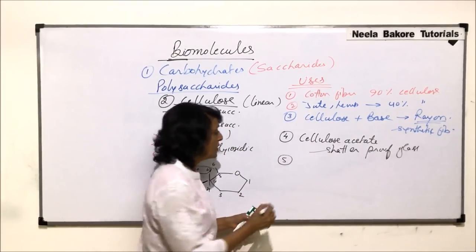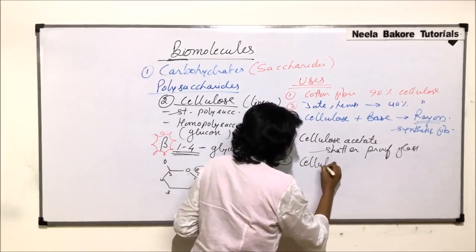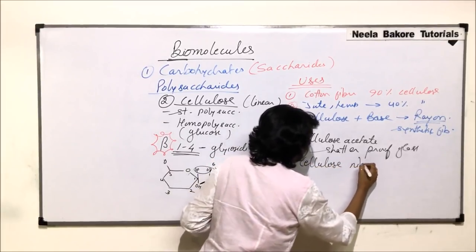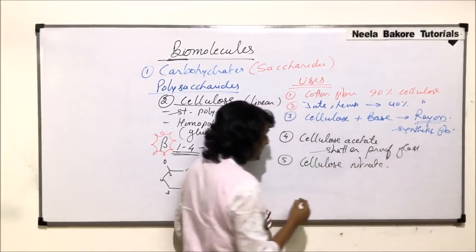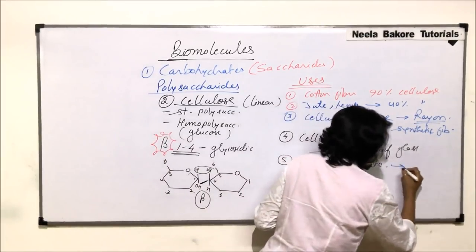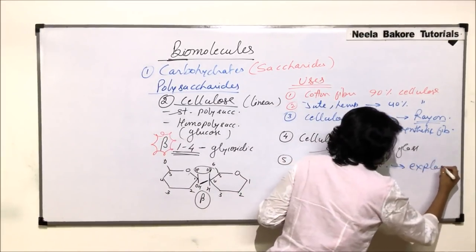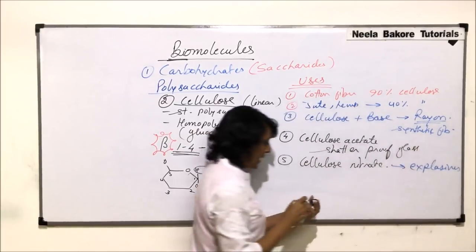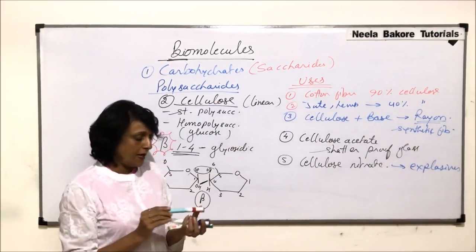Another chemical variation is cellulose nitrate. Cellulose nitrate is used to make explosives.